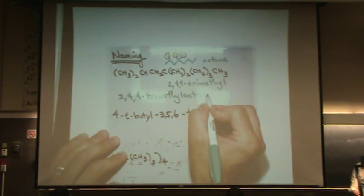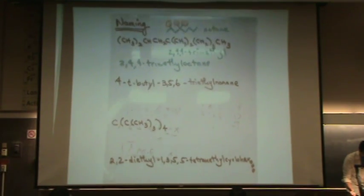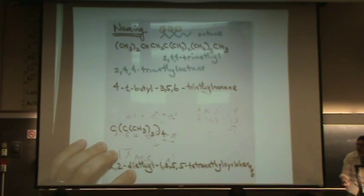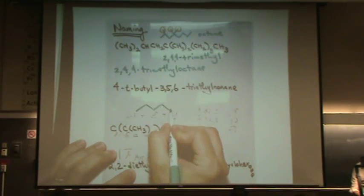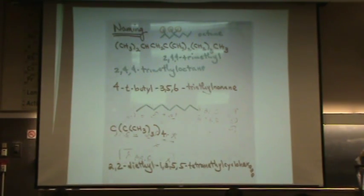You want to be extremely careful on the exam to print nicely and neatly so the TA can read what you're writing. Let's try the next one. Here I put it as the name and you're going to go backwards and draw it. If you're doing this, I'd start with the main chain nonane. So there's nine for the nonane.